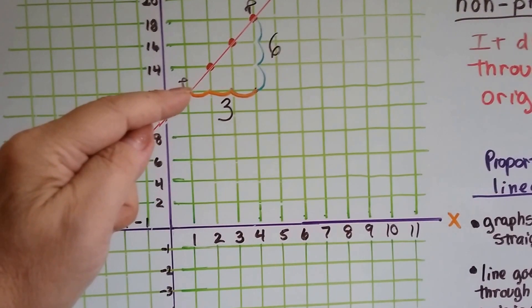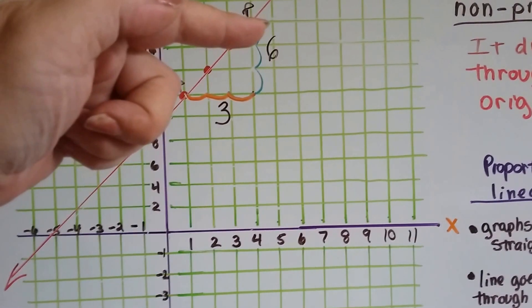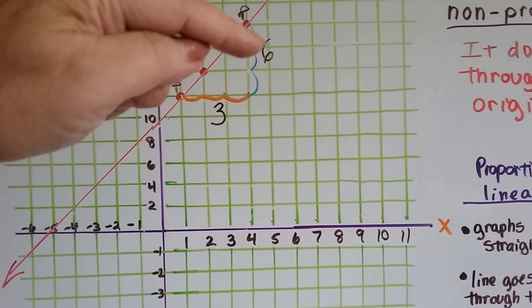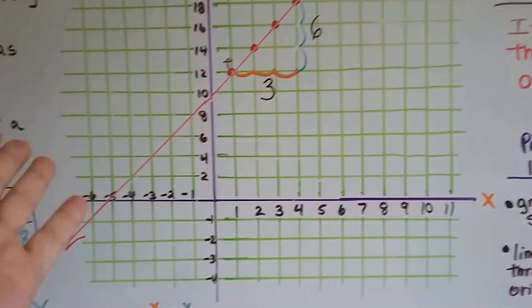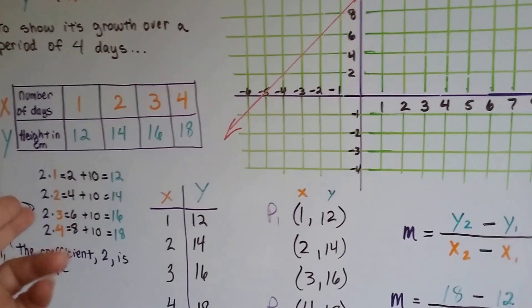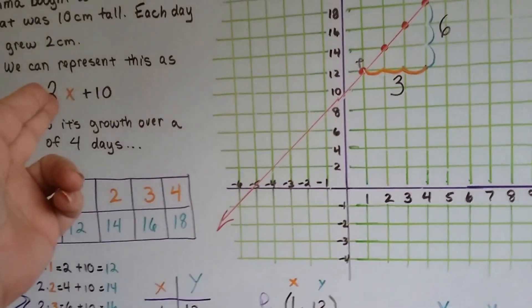So if we count 3 boxes, that's 1, 2, 3. So our rise is 6 and our run is 3. 6 divided by 3 is 2. Yep, our slope is 2. Just like it said here, just like m is 2 here.